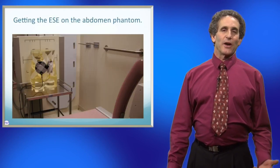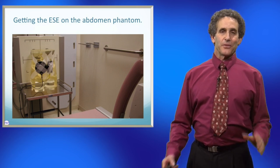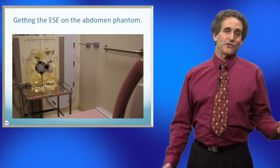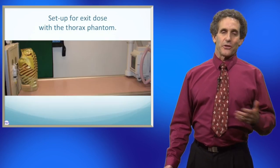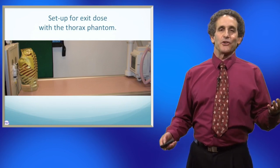When we want to figure out an entrance dose, all we have to do is take our phantom, put the ion chamber on the front, make an exposure, and it gives us a readout. When we want to know an exit dose, it's sort of the opposite. You just put it on the backside, make the exposure, and there's your exit dose.